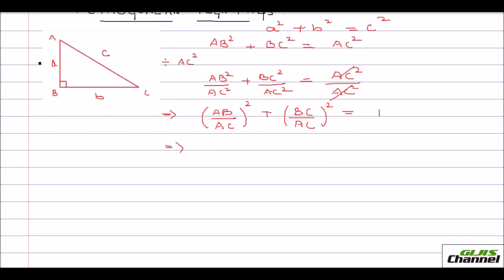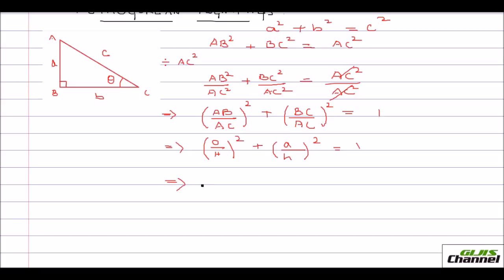Now I fix the angle here at C. From C's point of view, AB is the opposite side. So that is (opposite/hypotenuse)² plus (adjacent/hypotenuse)² equals 1. Opposite over hypotenuse is sine, and adjacent over hypotenuse is cosine.